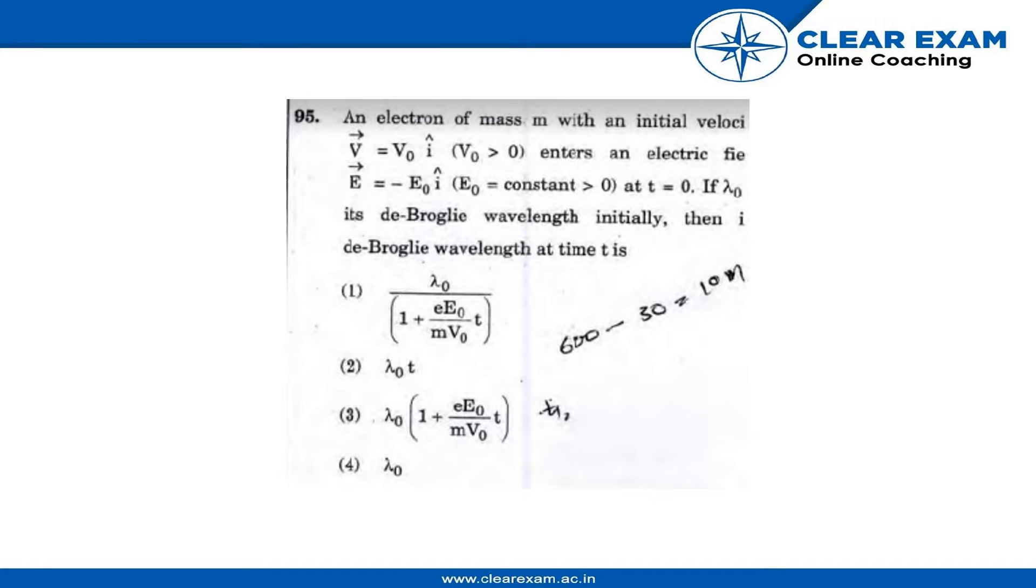The question is: an electron of mass m with an initial velocity v enters an electric field E at t equal to 0. If λ₀ is its initial de Broglie wavelength, then its de Broglie wavelength at time t is. The solution is: